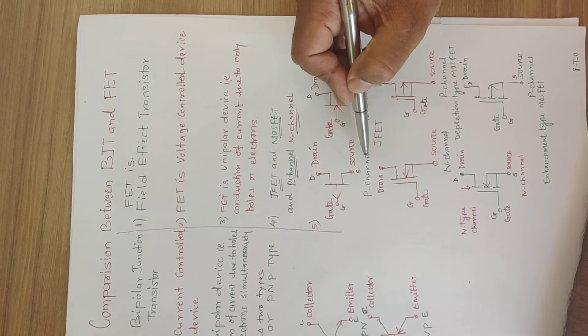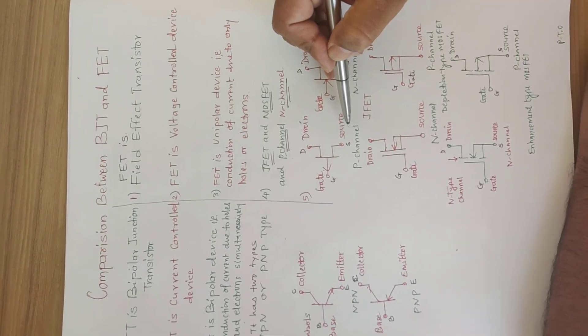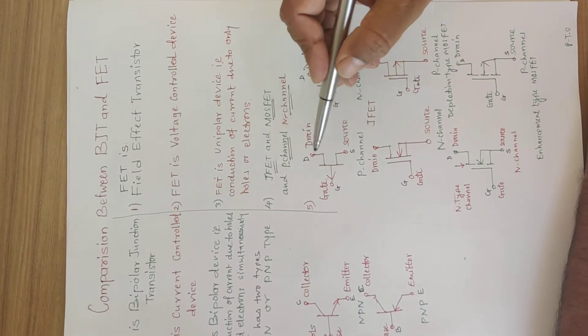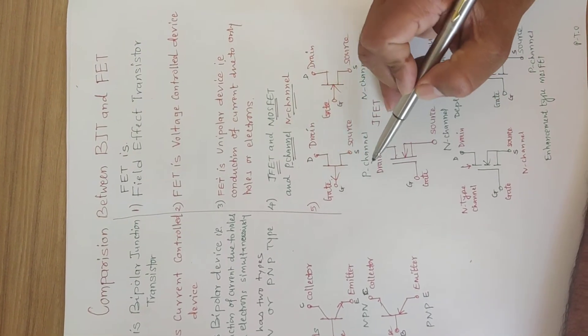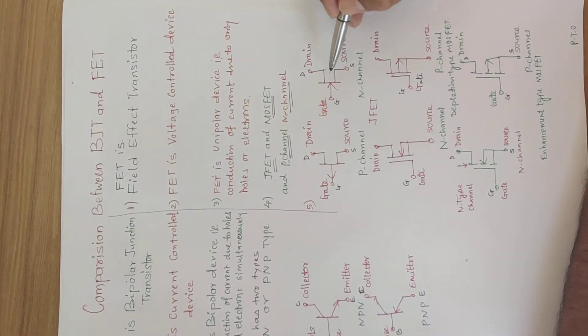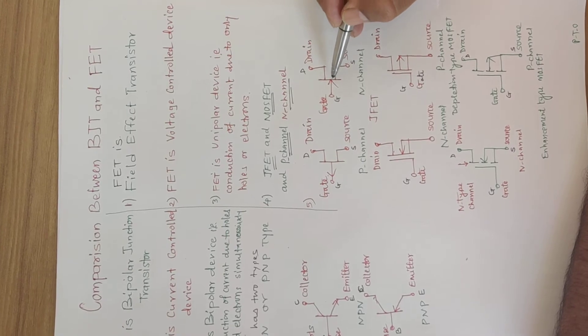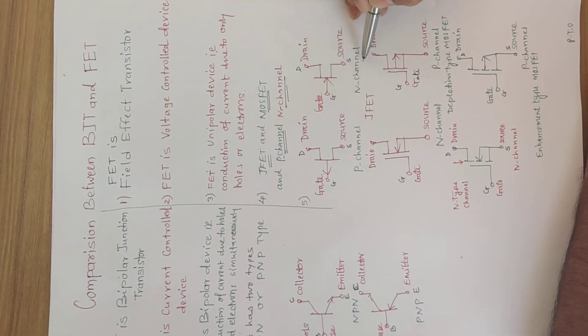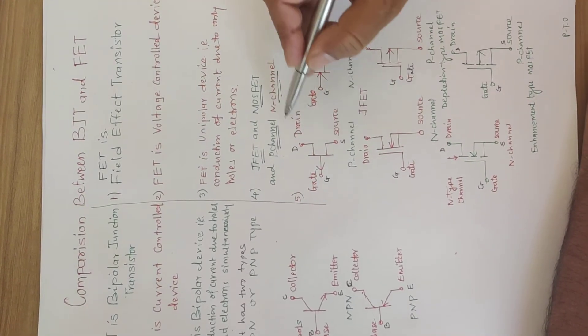In P channel MOSFET or JFET, the arrow is going out, shows P channel. When the arrow going inside, we call N channel. This is for JFET.